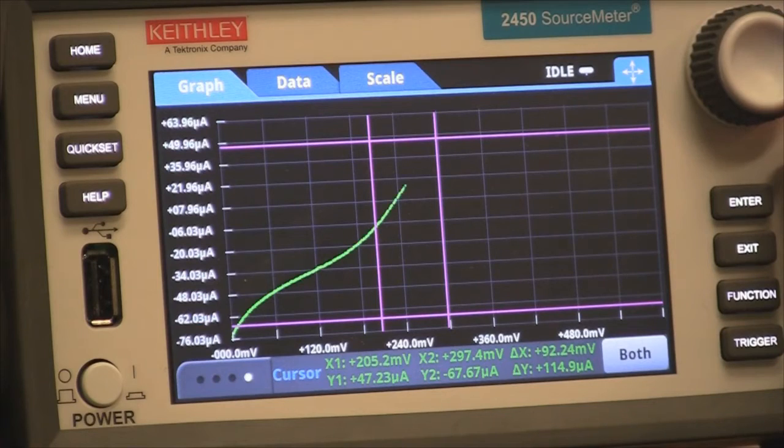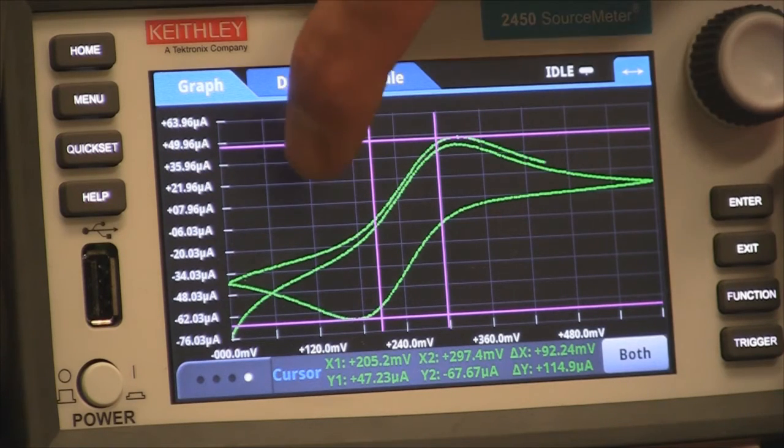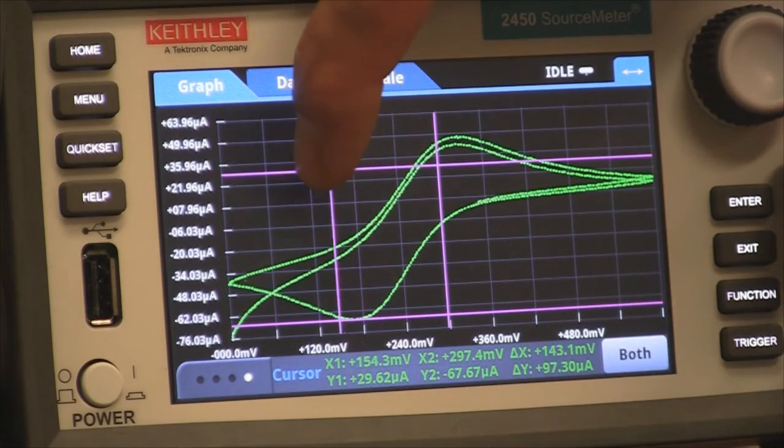So you can see the voltammogram running. You can see the first anodic peak. You can see the reduction peak. And at any time during the experiment or after, you can use the cursors and define the peaks or current levels.